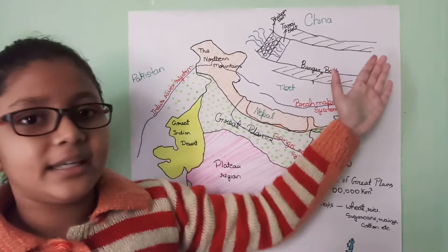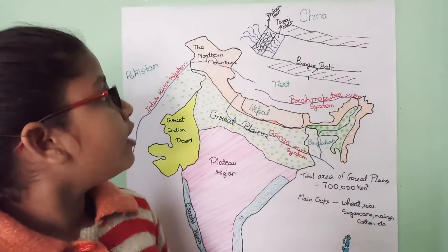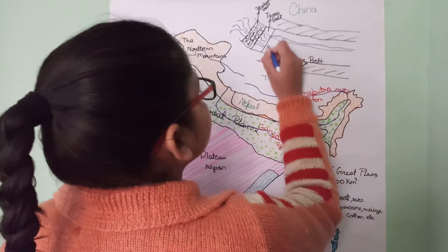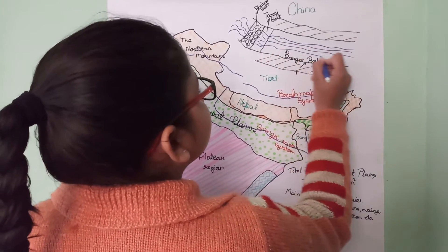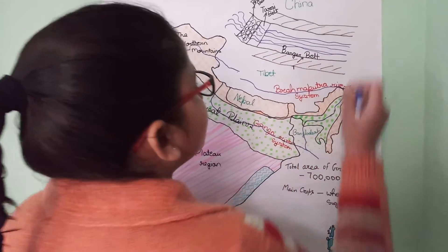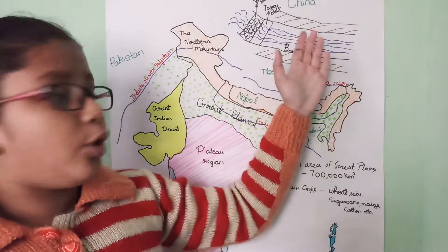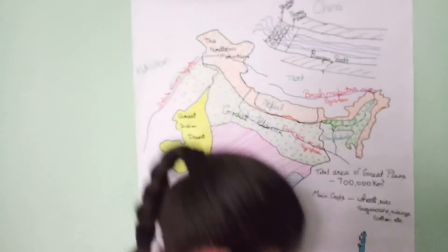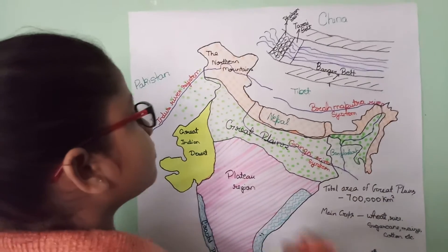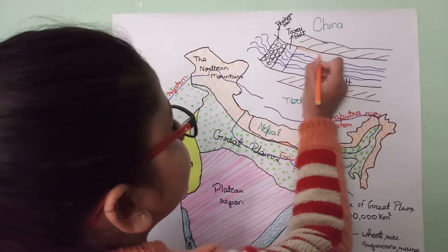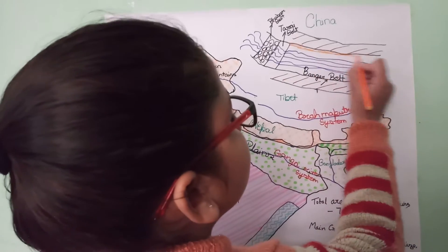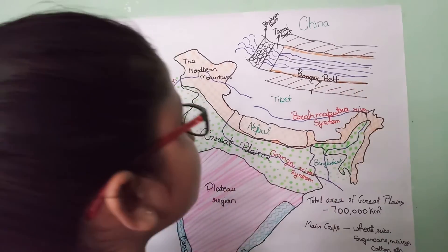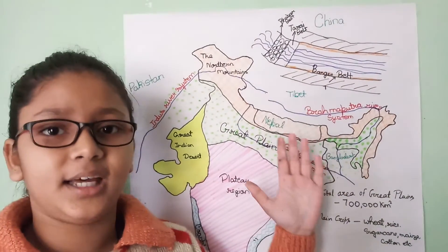Then, this part is the Khadar belt. When the rivers flow into the plains, they deposit fresh alluvial soil on their banks. This is the Khadar belt.